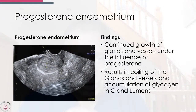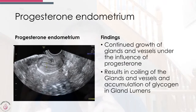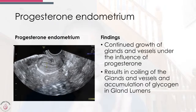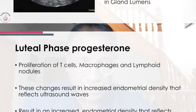In the progesterone-influenced endometrium of the luteal phase, there is continued growth of glands and vessels. Under the influence of progesterone, these result in coiling of the glands and vessels, and the glands start collecting glycogen in their lumens — that is how you see a slightly different change.